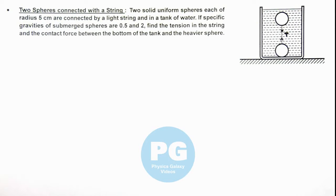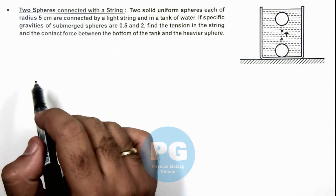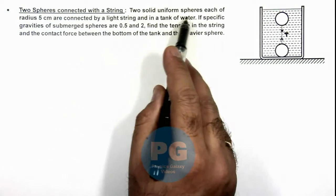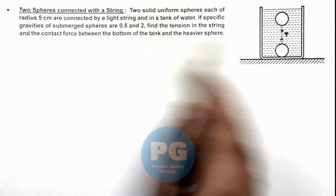In this illustration, we'll be analyzing 2 spheres connected with a string. We are given the 2 solid uniform spheres each of radius 5 centimeter are connected by a light string, and in a tank of water.